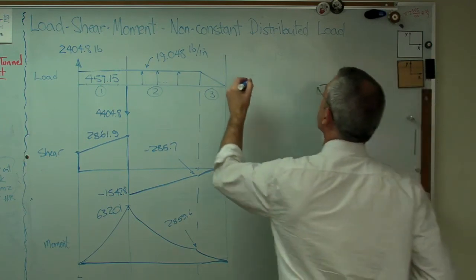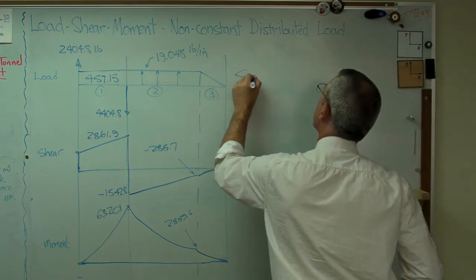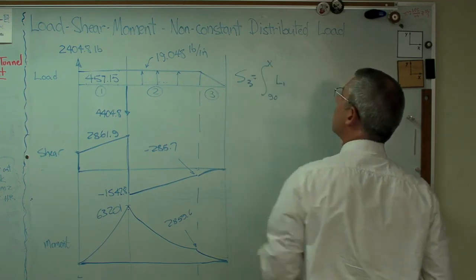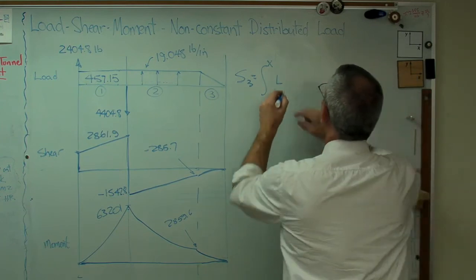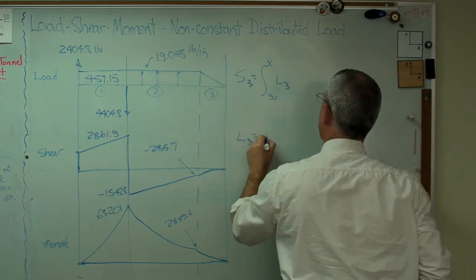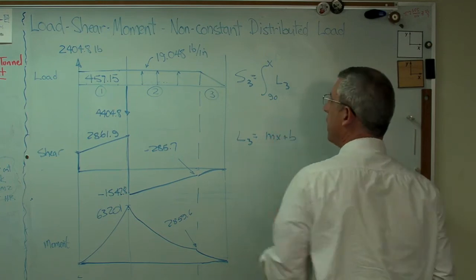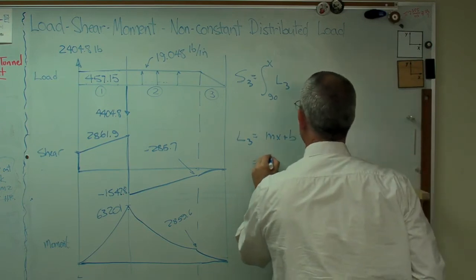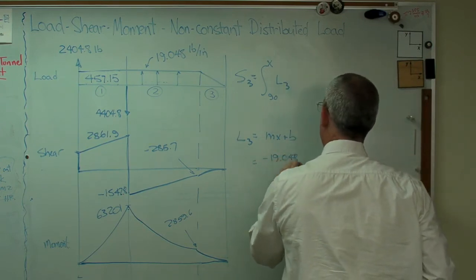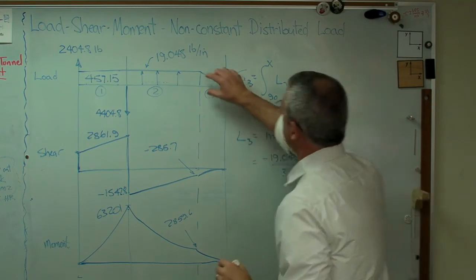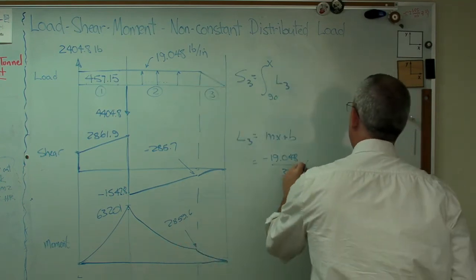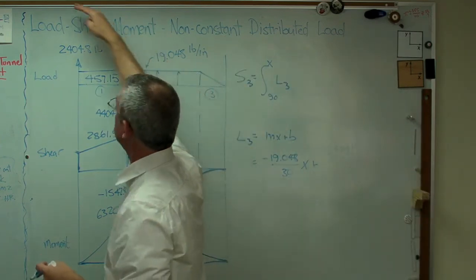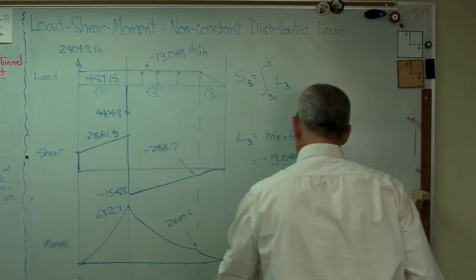And now I've got to do S3 equals an integral from 92x of L3. What's L3? L3, you should see, mx plus b. That's the equation for a straight line, right? Well, the slope is minus 19.048 over 30. That's the change in height and that's the change in length. x plus b. Well, the b is the y-intercept. The y-intercept is way the heck over there somewhere. I don't know. That's not that helpful. I could figure it out when I don't want to. Here's an easier way to do it.